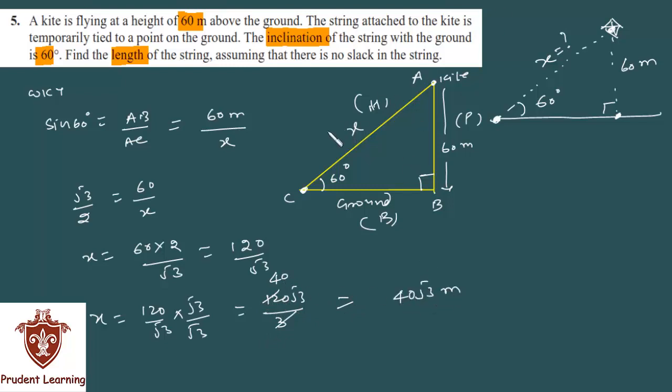This unknown distance X is 40 root 3 meters. So the final answer is: therefore, the length of the string is 40 root 3 meters. This completes our solution.